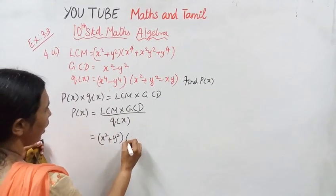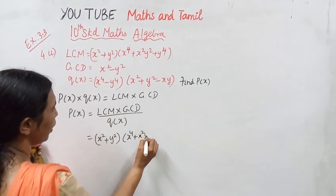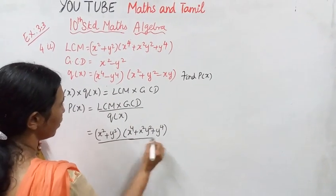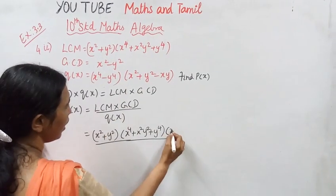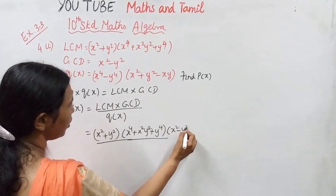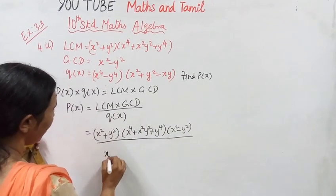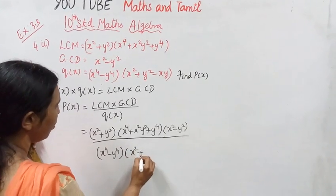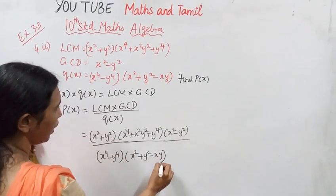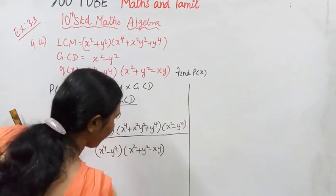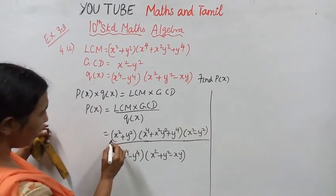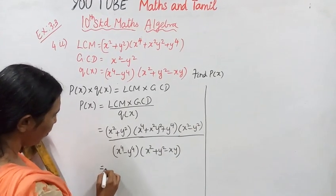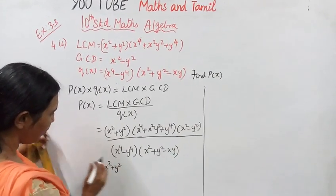So we substitute: LCM is x to the power 4 plus x squared y squared plus y to the power 4, multiplied by GCD which is x squared minus y squared, divided by x to the power 4 minus y to the power 4 into x squared plus y squared minus xy.